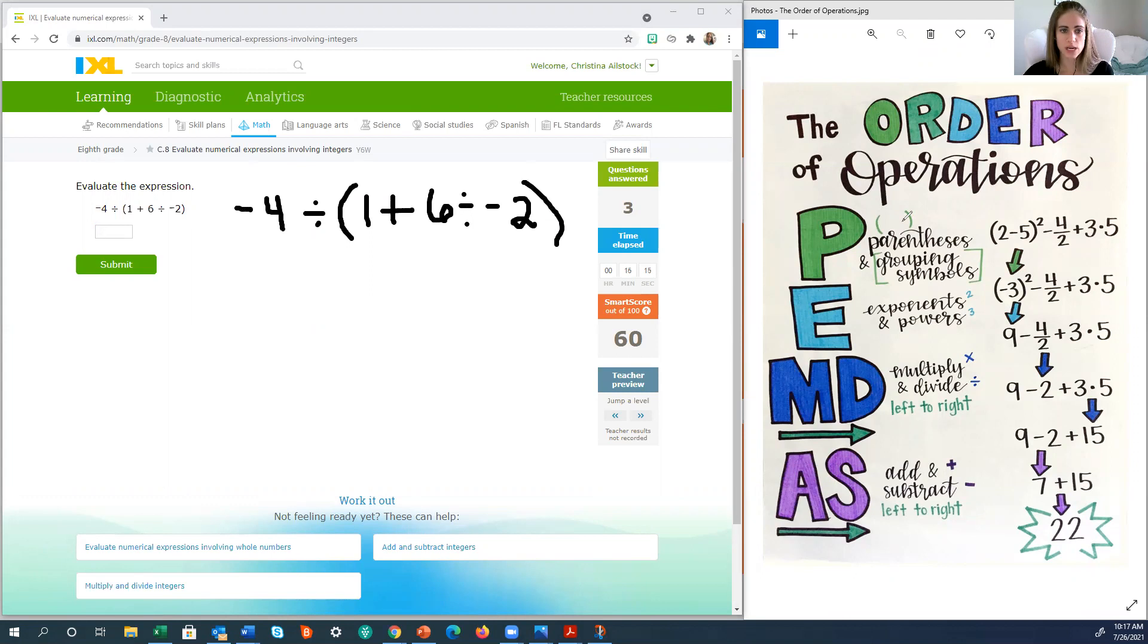Very, very first thing we need to do is look and see if we have parentheses. And I do. That means we need to work and evaluate, so actually simplify the parentheses at the very beginning. So this right here in parentheses is what we need to focus on. Now within the parentheses we still follow order of operations. So it's not that I'm forgetting the negative 4 and divided by out front. It's just that's got to wait until my parentheses are completely simplified. Within the parentheses, do I have any exponents? Nope, no exponents. So that step gets skipped.